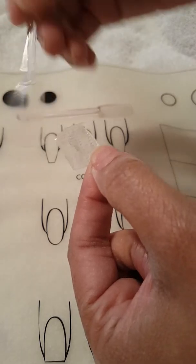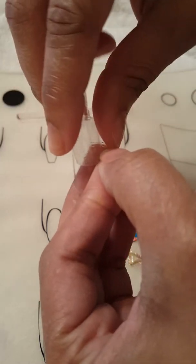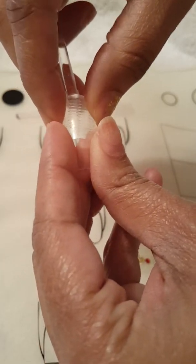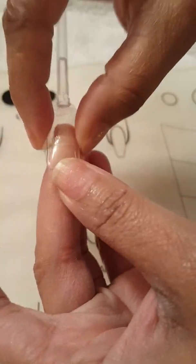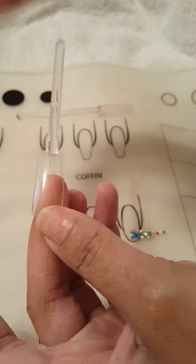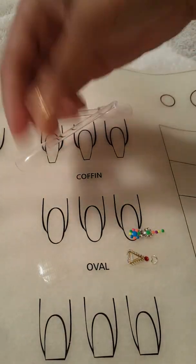You do not want to put your pre-made rhinestones on that. You know why? Because when you go to put it on the nail, you're going to have to manipulate that piece of gel. It's not going to lay on the nail, you see what I'm saying? It's just not going to work.